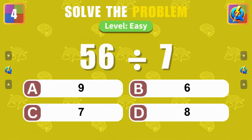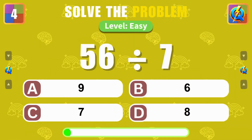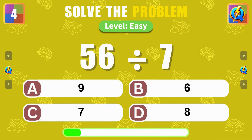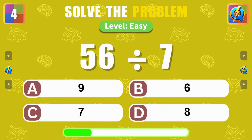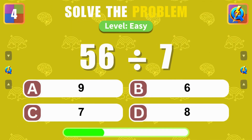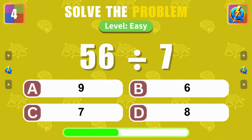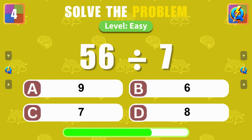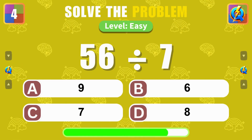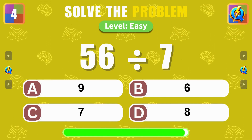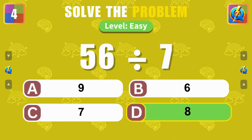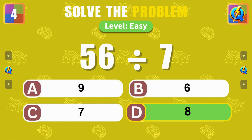What is the result of 56 divided by 7? Spot on! The answer is 8.